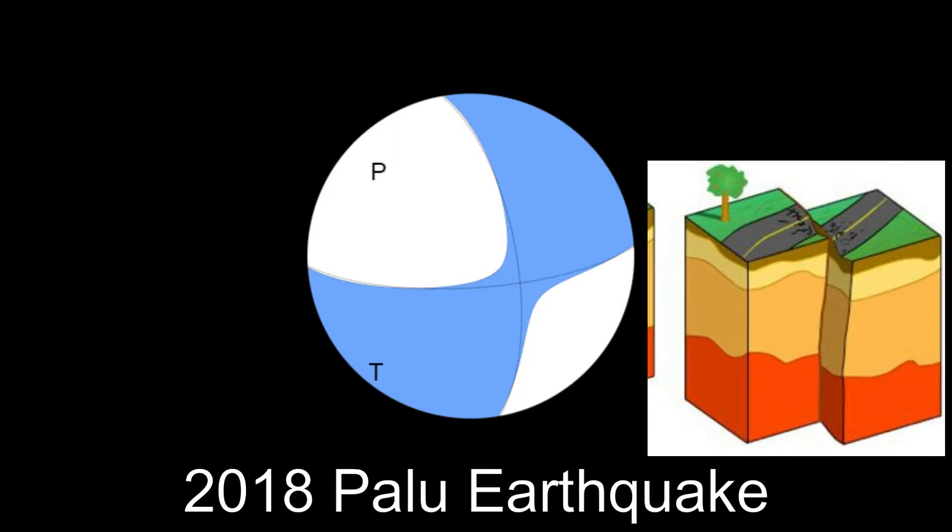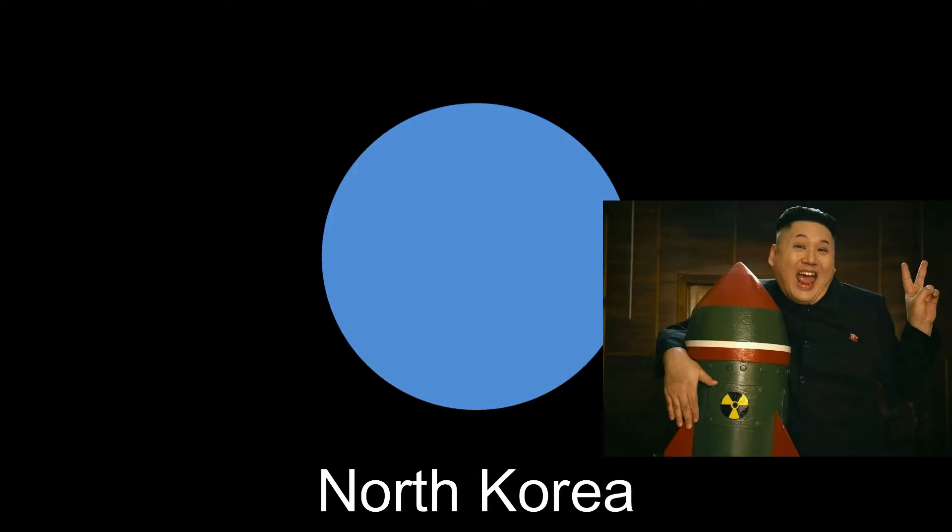If there are two quadrants of blue and white, it's a strike slip fault, where one crustal block slides past another. If it's all blue, it's an explosion, not an earthquake.